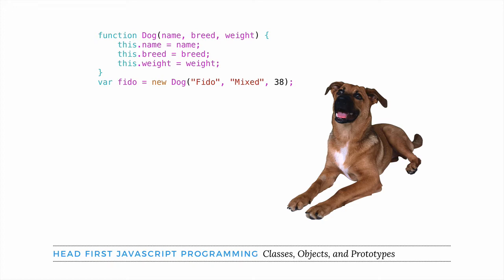JavaScript is an object-oriented language and we can make new objects using the new keyword with a constructor function. If you have a dog constructor function with three parameters — name, breed, and weight — you can make a dog like this by calling the dog function with new and passing in argument values for name, breed, and weight. Then you have a new dog object, Fido.